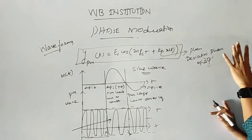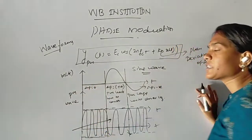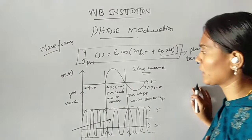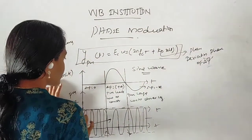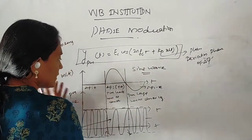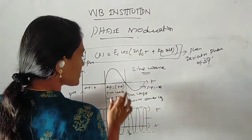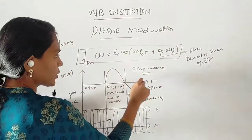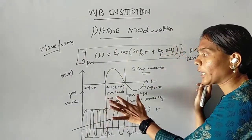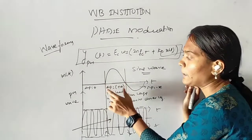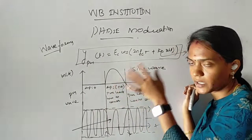The phase deviation is Δφ. When we change the modulating signal, the phase of the carrier changes accordingly. If the modulating signal is a sine wave, when Δφ is positive in the positive half cycle, the PM wave leads with respect to the carrier signal.